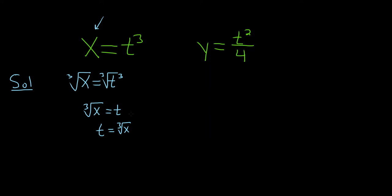So once we solve the first equation for t, we can basically take this and plug it into the second equation. So we have y equals the cube root of x, and then this is squared. That's all over 4.